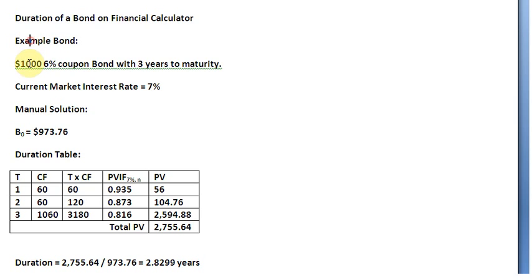So we have an example here. It's a $1,000 face value bond with a 6% coupon rate and 3 years remaining to maturity. 7% is the rate of interest in the market at the moment and we have been provided with the manual solution. The bond price is $973.76 and through this table and calculation, we have found out the duration of the bond which is equal to about 2.83 years.